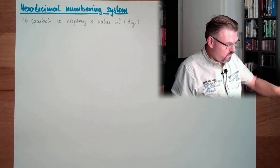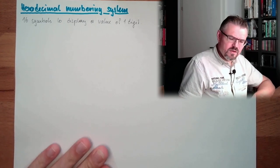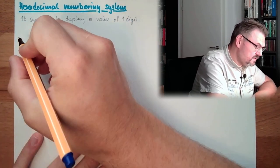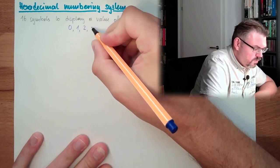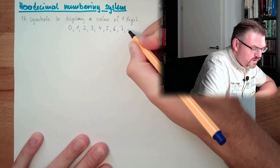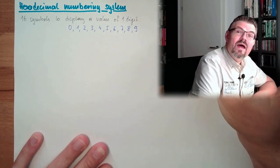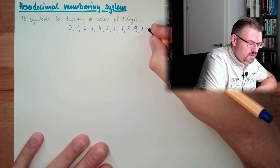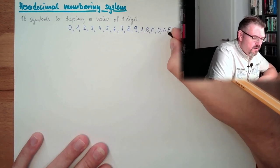Those symbols are, we're using numbers. So we have the ten symbols of the decimal system: 0, 1, 2, 3, 4, 5, 6, 7, 8, 9. And then we are adding letters, simply from the alphabet: A, B, C, D, E, F. So we have 16.